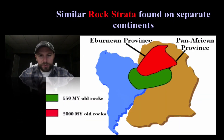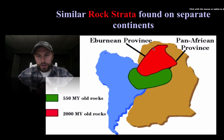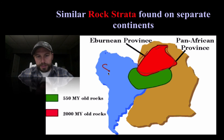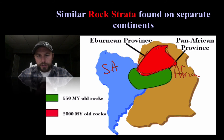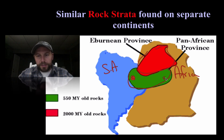That evidence includes similar rock strata — we have rocks that bridge both South America and Africa. Same-age rocks, meaning they were connected. The same applies to this green area: the rocks over here have been dated to be the same age as those over there.